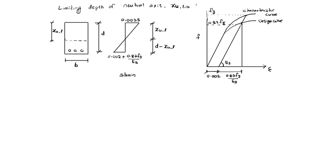Now, XU limiting. From similar triangles: XU limiting divided by 0.0035 is equal to D minus XU limiting divided by 0.002 plus 0.87 FY by ES.